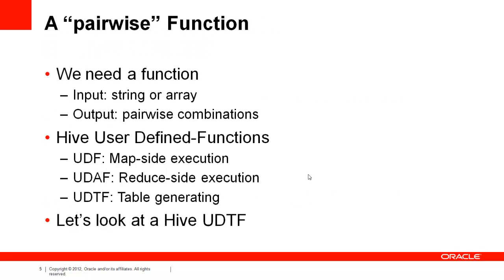Let's consider the simple case of a pairwise expansion — just the pairs of items in a shopping basket. Hive doesn't provide a function which produces this, so we'll need to write one. This function takes in a comma-delimited string and produces all the pairs within that set of items.